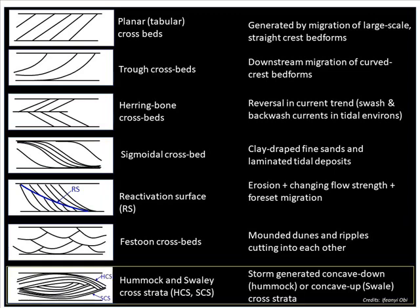The last expression I'll be showing is hummocky and swaley cross strata. These are not tidal indicators; for the most part we prefer to use the term cross stratification, not crossbeds. Hummocky and swaley cross strata are generally storm indicators, forming in shallow marine environments where you have hurricanes that produce high energy and deposit sediments. Sometimes you have the pair complete — sometimes you have one set. The upper half, which is concave down, is the hummock, and the lower half, which is concave up, is the swale, also called swaley cross strata.